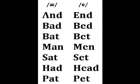Alright, so how do you make the difference between the two words? And — end. Bad — bed. Bat — bet. Man — men. Sat — set. Had — head. Pad — pet.